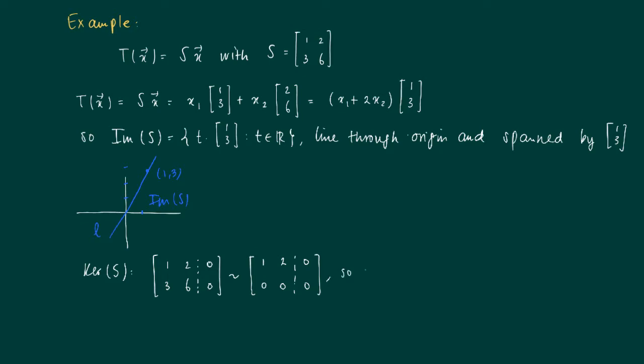So we may conclude that X belongs to the kernel of S when X equals T times [-2, 1] for some T in R. So basically the kernel here is again a line through the origin, but now with direction vector [-2, 1].